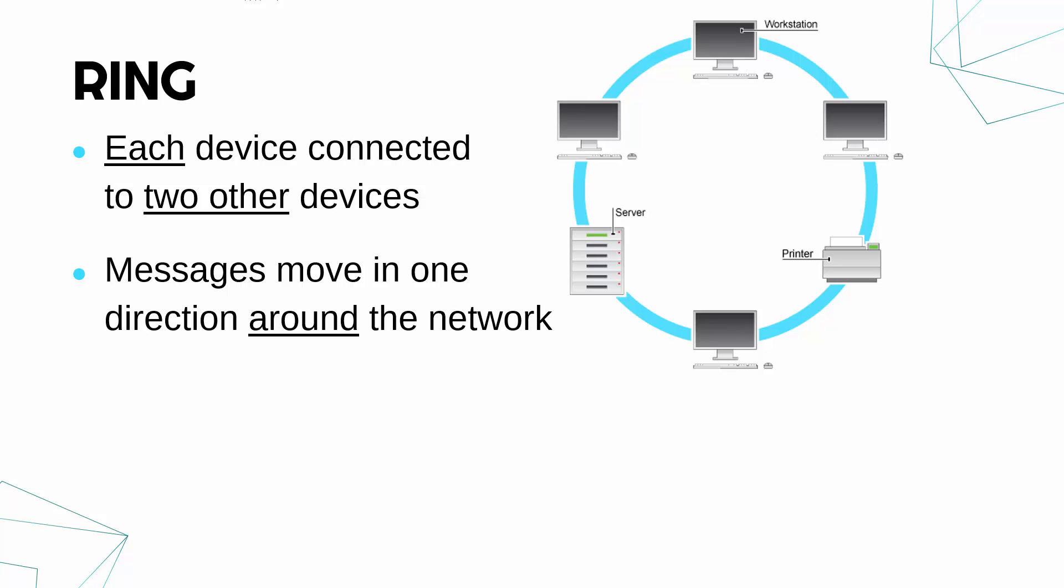The point of this network is messages will move in one direction around the network. So it's a one-way system. You've got to go via other devices. Let's say in a standard ring network, this top workstation was accessing this server. The message would have to go through the other devices, going around up to the server. If that was going clockwise, if it was anticlockwise, it would just go the other way around. But it's got to go one way around. It can't skip devices. It's got to just pass through devices on the route.